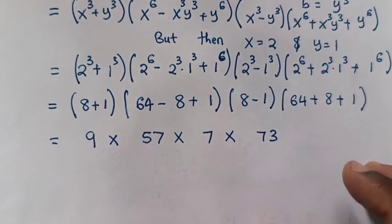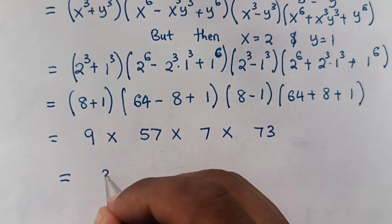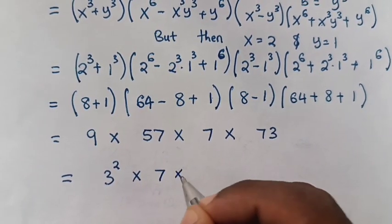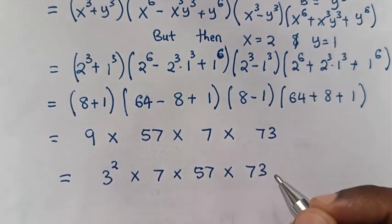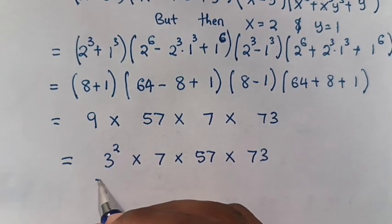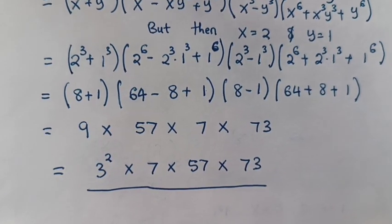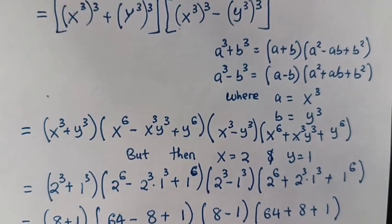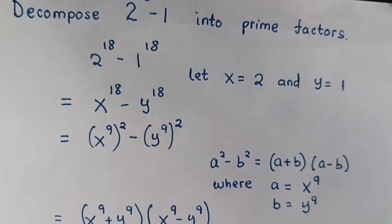So the final result is equal to 9, which is 3 squared, times 7, times 57, times 73. This is the final answer of the prime factors. Don't forget these steps. Drop a like to this video and subscribe to my channel. See you in the next video, bye bye.